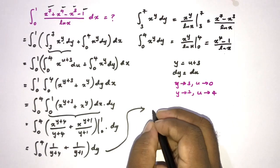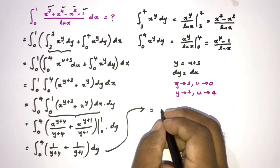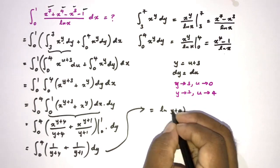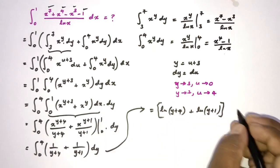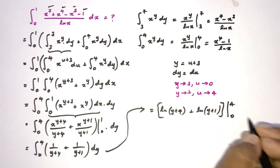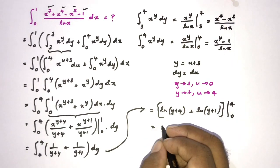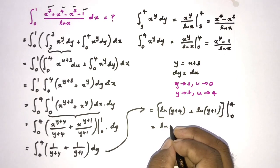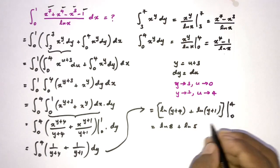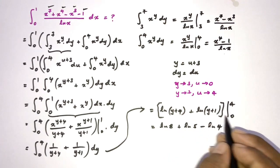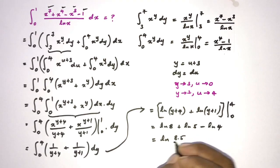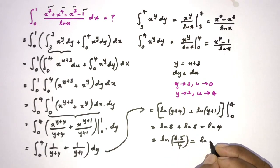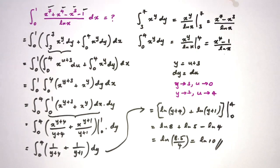Integrating gives natural log of y plus 4 plus natural log of y plus 1, evaluated from 0 to 4. Applying the limits: at y equals 4 we get natural log of 8 plus natural log of 5; at y equals 0 we get natural log of 4 plus natural log of 1, and natural log of 1 equals 0. Using properties of logarithms, this simplifies to natural log of 8 times 5 over 4, which equals natural log of 10. That is the answer. If you like this type of video, please subscribe to this channel. Thank you for watching.